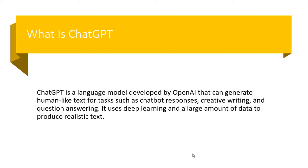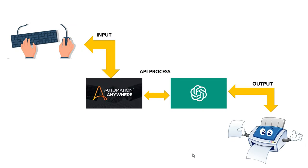Nowadays so many use cases are running with ChatGPT — you can see so many integrations on YouTube channels. Today we will see how we can generate a ChatGPT response in Automation Anywhere. We will cover: how to take input from the user, how to connect Automation Anywhere with the ChatGPT API, how to get data from the API, and how to generate output using the tool.